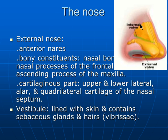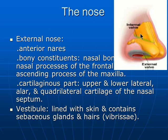The bony part is formed from the nasal bone, the nasal process of the frontal bone above, and the nasal process of the maxilla. The cartilaginous middle third is formed by the upper lateral cartilage on each side, with the nasal septum in between.